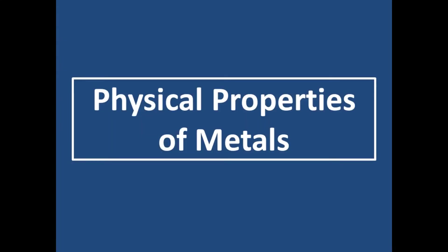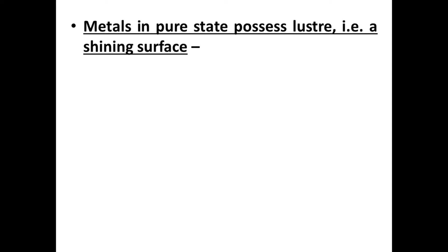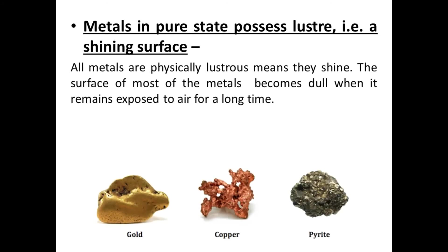Now we will discuss in detail the physical properties of metals. There are different properties of metals by which we can identify that these are metals. I told you at the start that metals are defined as those which have luster, but luster is not the only property — there are many more properties. Let's discuss them.